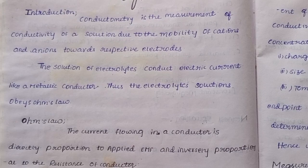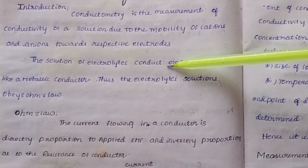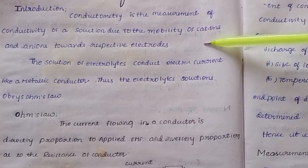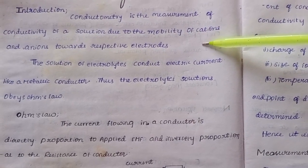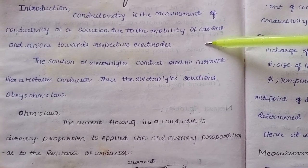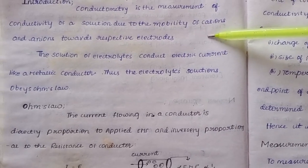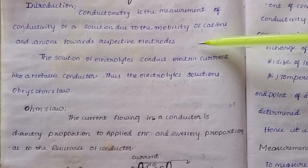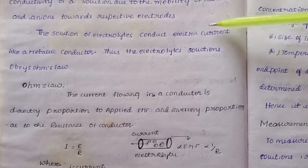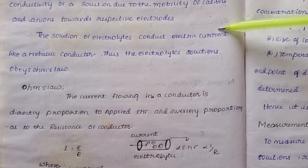Conductivity is due to the mobility of cations and anions with respect to the electrodes. We have two electrodes. Mobility is nothing but the movement of ions. Solutions of electrolytes conduct electric current.